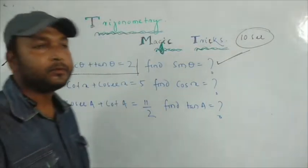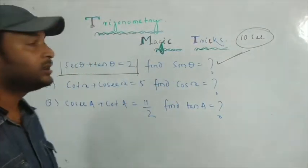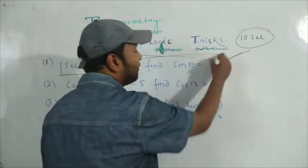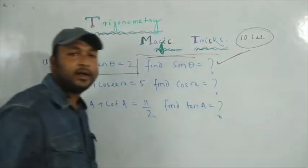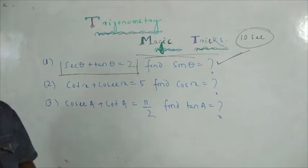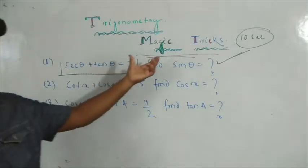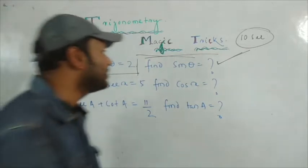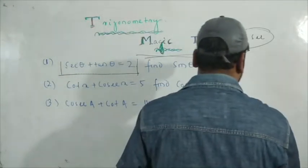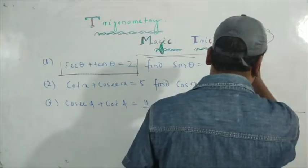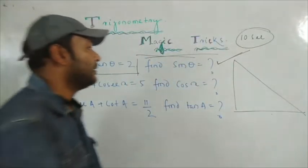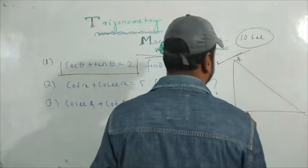How do you solve this? This is all about magic tricks. What are the magic tricks? This is all about the Pythagorean theorem — the magic tricks are based on the Pythagorean theorem. What does the Pythagorean theorem say? Just take a right-angled triangle.